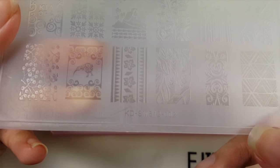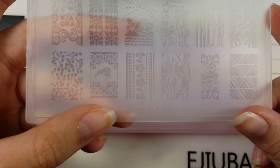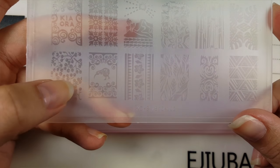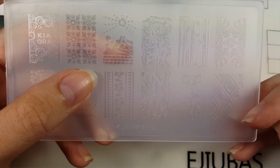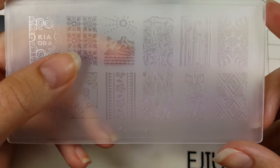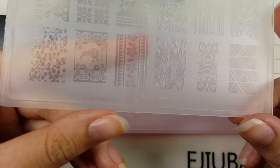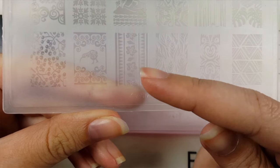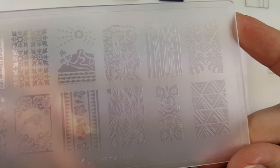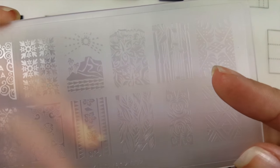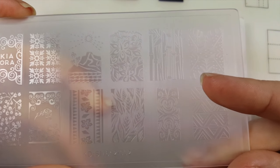This is plate number two and you have Kia Ora here, a kiwi bird, some cherries. I think these are actually dupes of Bundle Monster plates. Here we have like the sun above a mountain, we've got hibiscus flowers and different prints, all different travel designs and flowers. Beautiful tropical plates for the summer. This looks like bamboo and leaves.